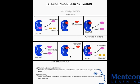Allosteric regulations are a natural example of control loops such as feedback from downstream products or feedforward from upstream substrates. Long range allosteric regulation is especially important in cell signaling. Thank you.